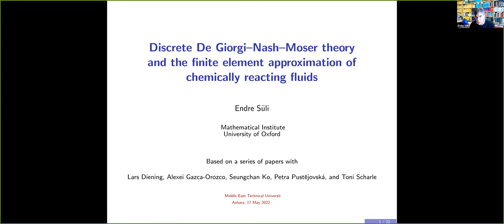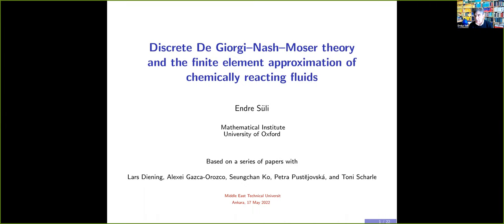One peculiarity of the problem is that for reasons we can't control, one needs what is called a Hölder norm bound on the sequence of numerical approximations. The question was how to come up with a bound on the sequence of finite element approximations in this Hölder norm. It turns out that in the theory of partial differential equations there is such a theory. If you have solutions to elliptic or parabolic partial differential equations, one of the big results is that by De Giorgi, Nash, and Moser, which guarantees Hölder norm bounds on solutions.